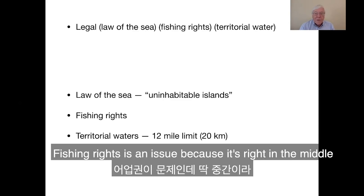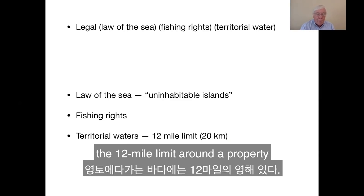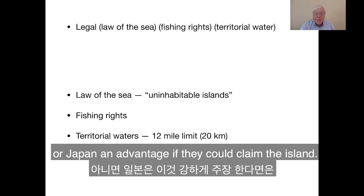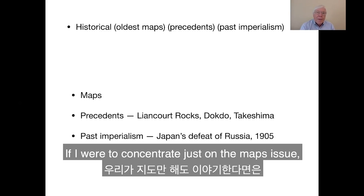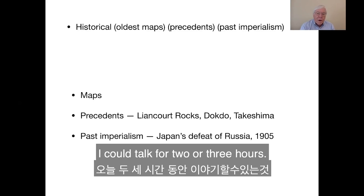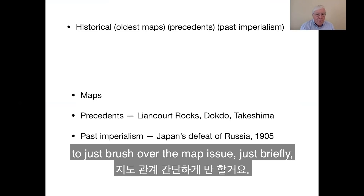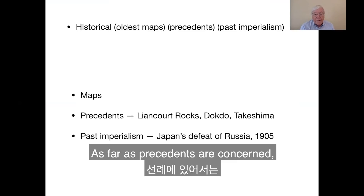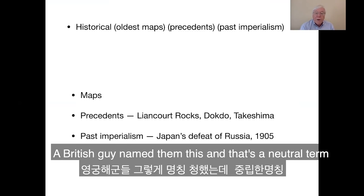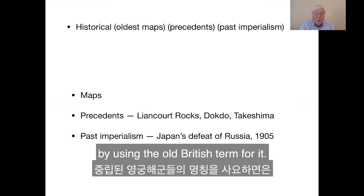The fishing rights is an issue because it's right in the middle and both sides want to claim the fishing waters around it. There's also the territorial waters — the 12-mile limit around property, which gives Korea or Japan an advantage if they can claim the island. The maps issue is a real problem. I could talk for two or three hours just on maps, but I'll briefly claim that Korea has the better argument as far as maps are concerned. There's also the precedent of calling them the Liancourt Rocks — a British name — which is a neutral term sometimes seen on maps to avoid the Dokdo and Takashima controversy.